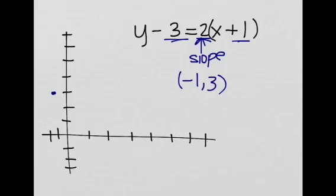So we have negative 1, 3, and we have a slope of 2, so that means the graph is something like that.